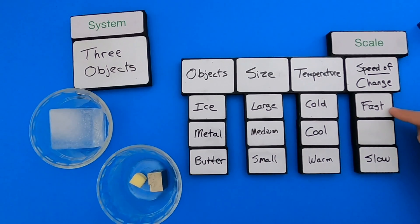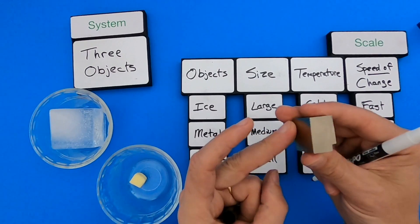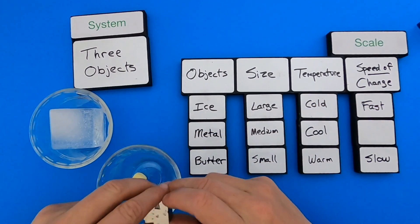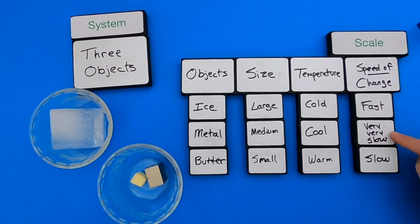So I filled in fast for ice because it melts quickly. Butter might eventually melt over days. And now I'm thinking about the metal. So the metal, I don't see this changing at all, but I imagine if I were just leave it here and come back in say a million years, it's going to change in some way. So I could just speculate that the speed of change is going to be very, very slow.